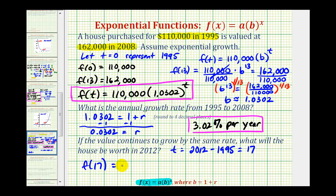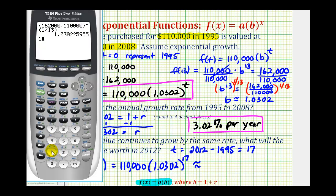Which is equal to $110,000 times 1.0302 raised to the seventeenth power. We'll go back to the calculator, raise it to the seventeenth power. We'll go and round to the nearest dollar and say the value is going to be approximately $182,414.